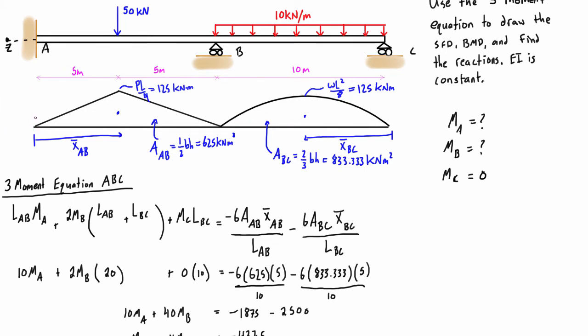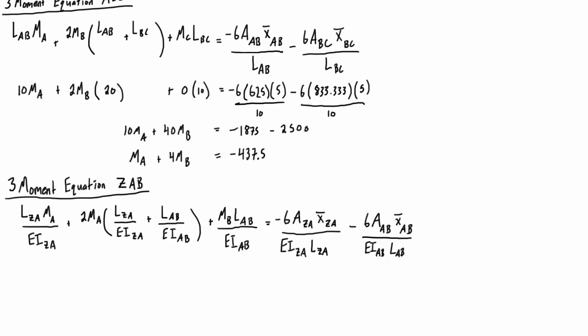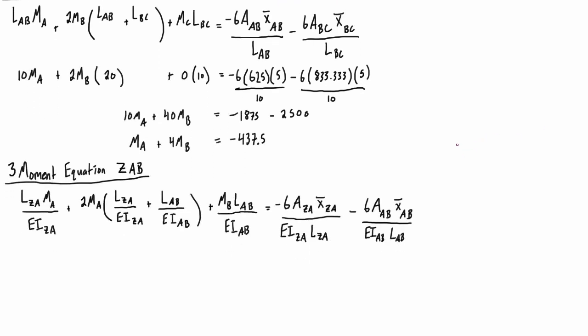We only have the area for AB and the x-bars for AB, and area for BC. So we didn't draw an area bending moment diagram over on this side, but you're going to see that we don't actually need it because if the moment of inertia I_ZA is equal to infinity, which is what we're going with—